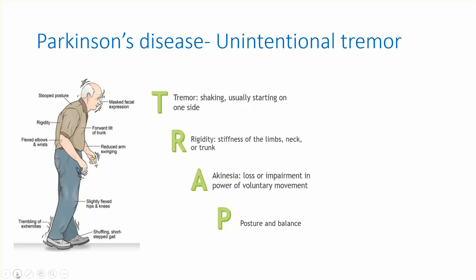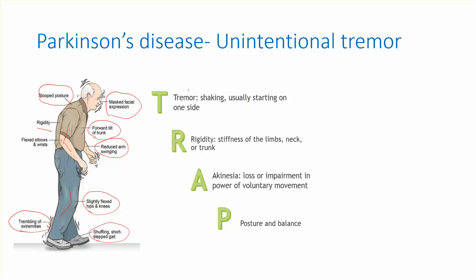Parkinson's disease is the most common type of extrapyramidal disease. Features include an unintentional tremor and a stooped posture. There is rigidity of the muscles, a masked facial expression with no expression on the face, and a forward tilt of the trunk. There are flexed elbows and wrist, reduced arm swinging, slightly flexed hips and knees, trembling of the extremities, and a short shuffling stepped gait — also called the festinating gait.